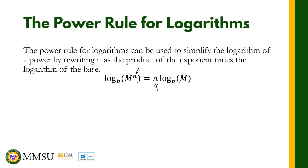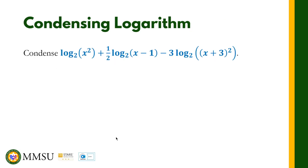The power rule states that if we have the logarithm of m raised to n with base b, we just put that exponent as a coefficient. The same is true the other way around: if we have a coefficient, we can make it the exponent of m. So the coefficient will be written as the exponent of m.